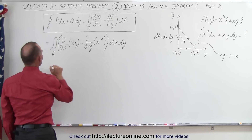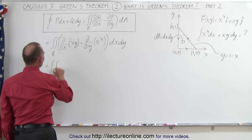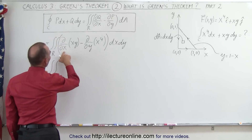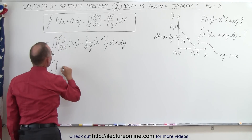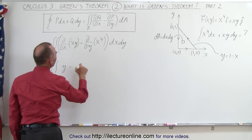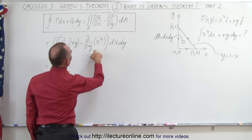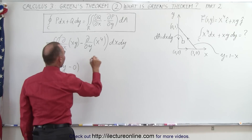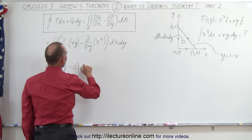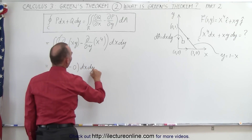So this is equal to the double integral: the partial of Q with respect to x is going to be y, minus the partial with respect to y of P — which is x to the fourth — and that's going to be zero. Then times dx times dy.